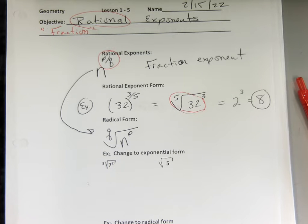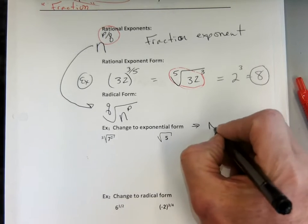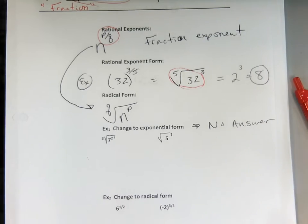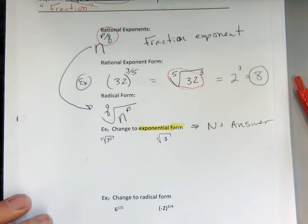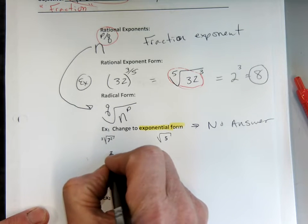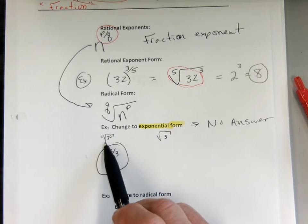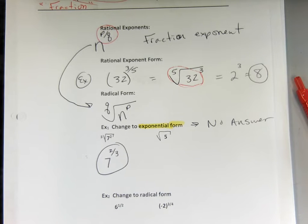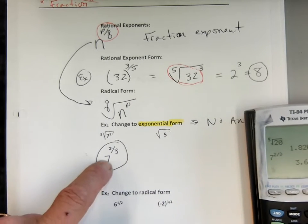Example 1 is actually really easy because all they want us to do is change it — change it to exponential form. No answer needed, just rewrite it. I'm going to rewrite this as 7 to the 2/3 power. 7 is my base to the 2/3 power. What is 7 to the 2/3? It's an ugly, irrational number, so we leave it as 7 to the 2/3.